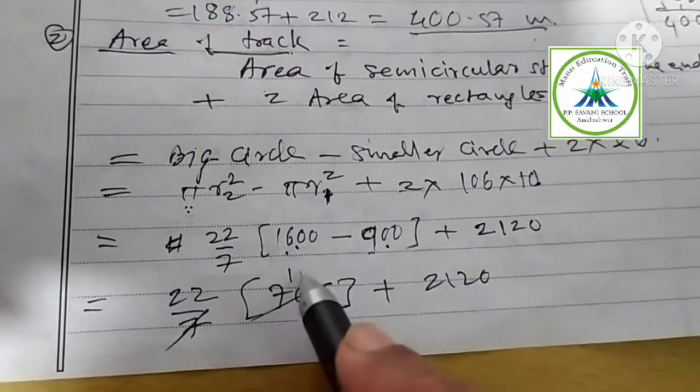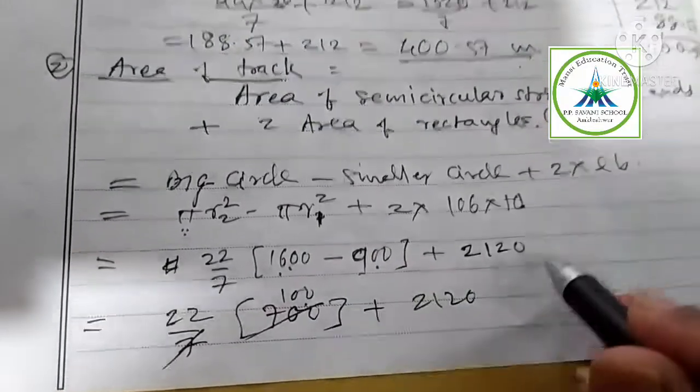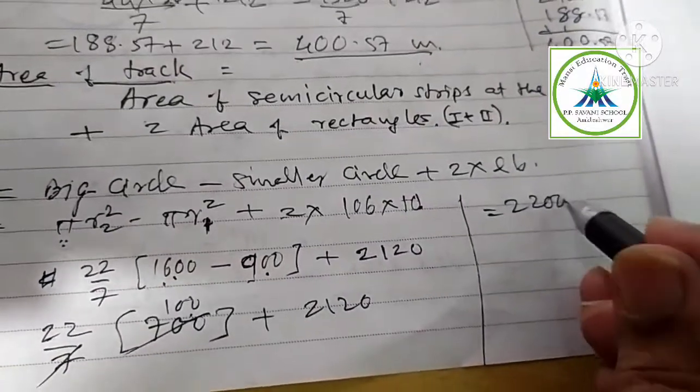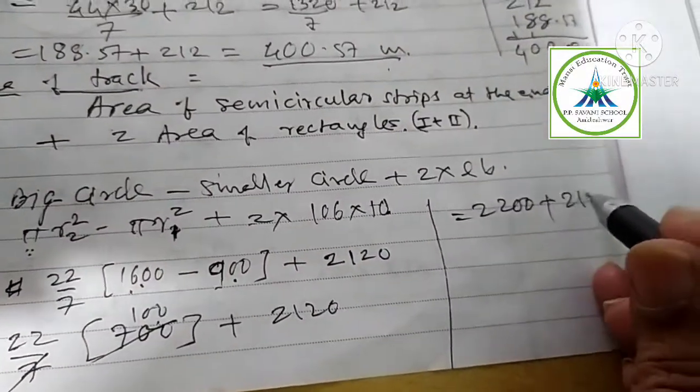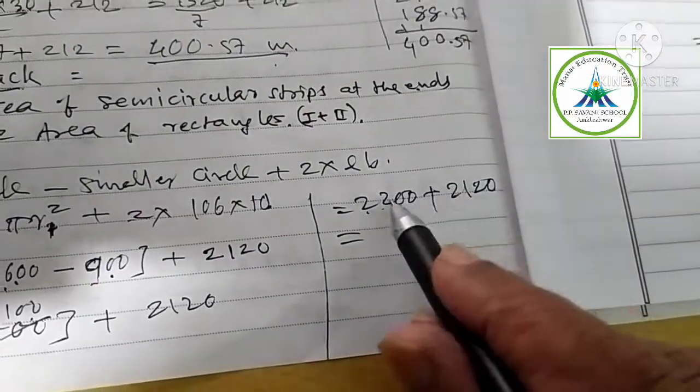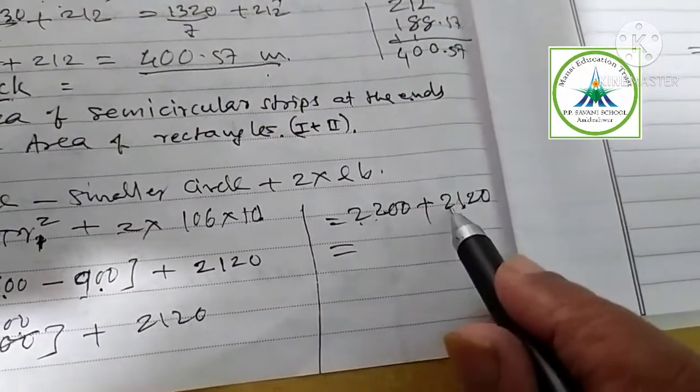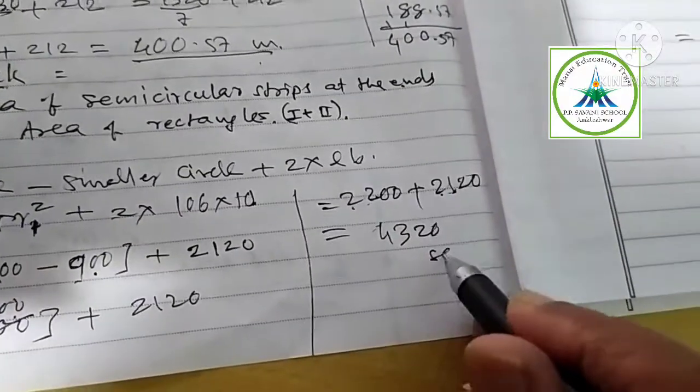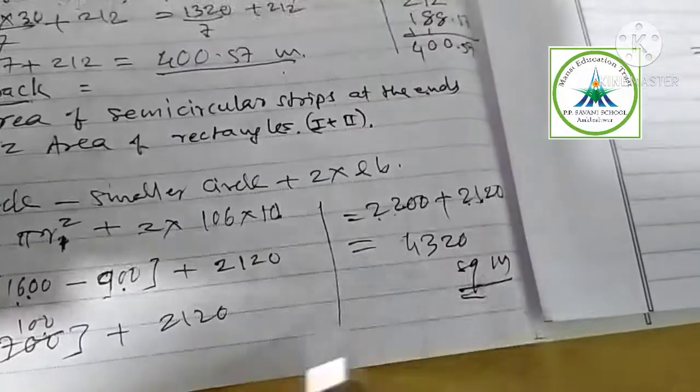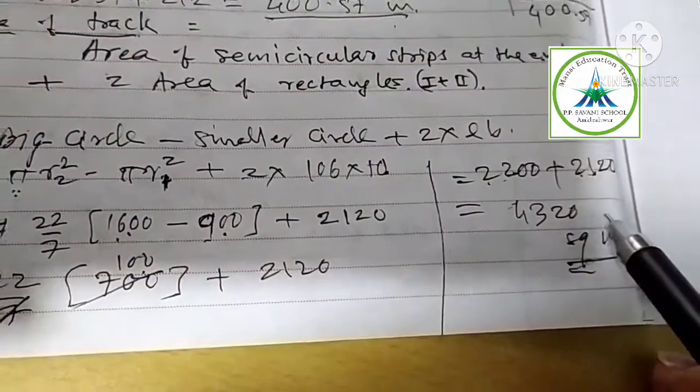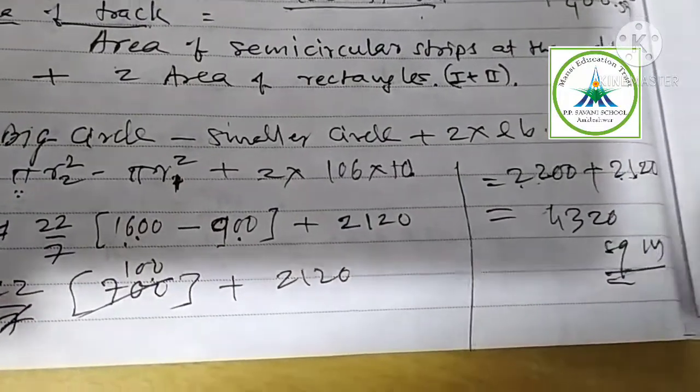Equal to 2200 plus 2120. That is what you are getting, 4320 square meter. Area of the track equal to 4320 square meter.